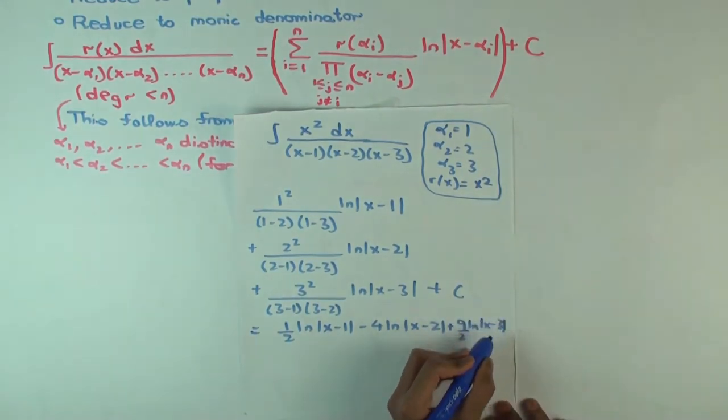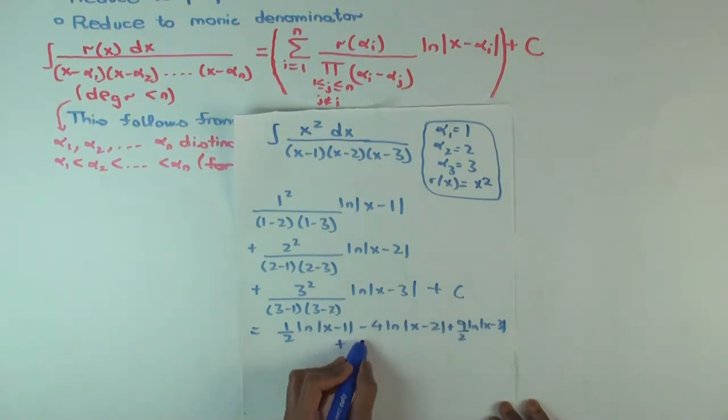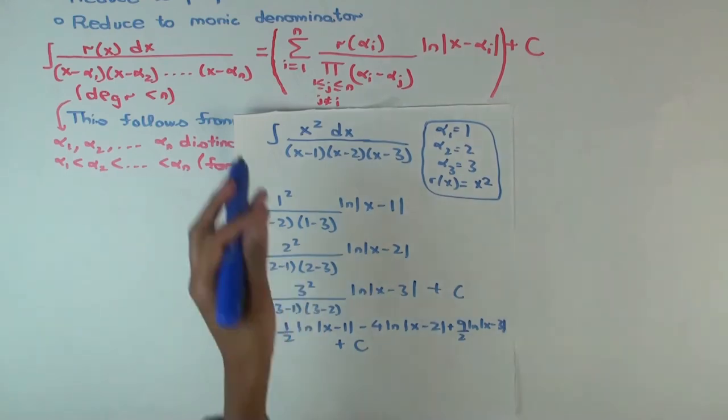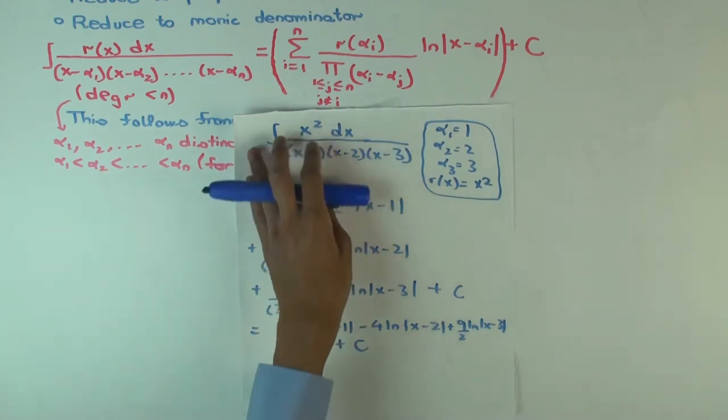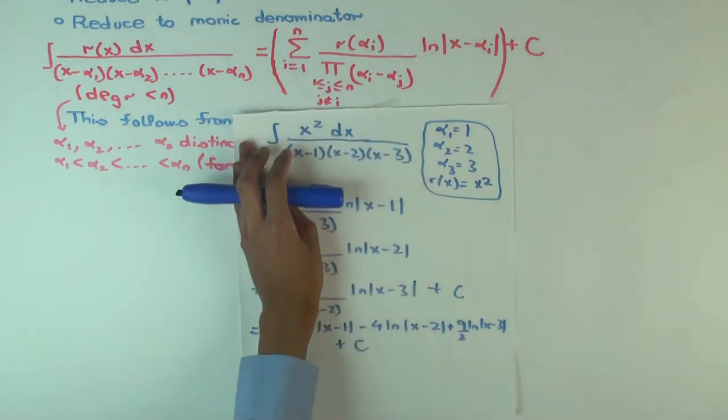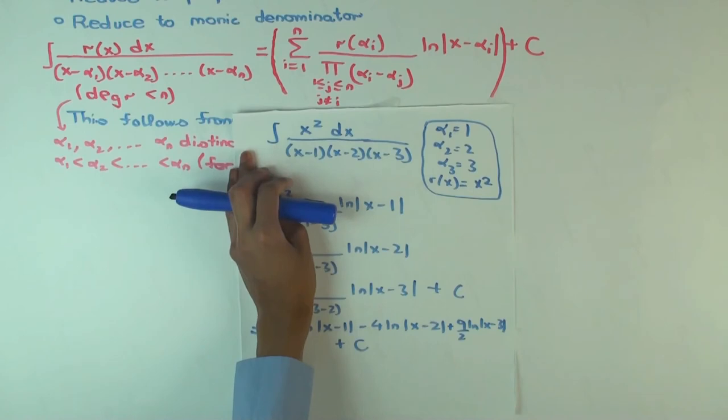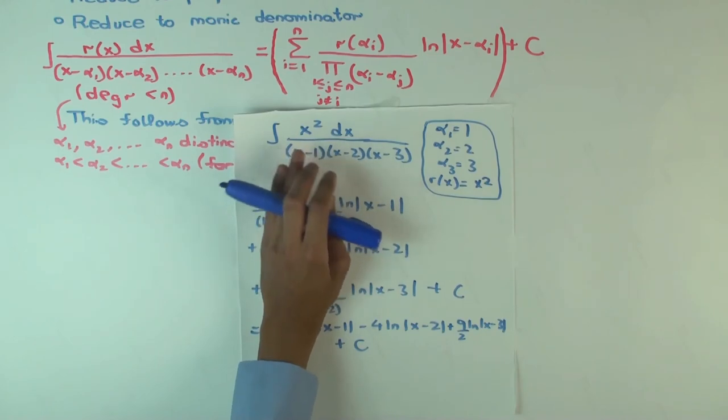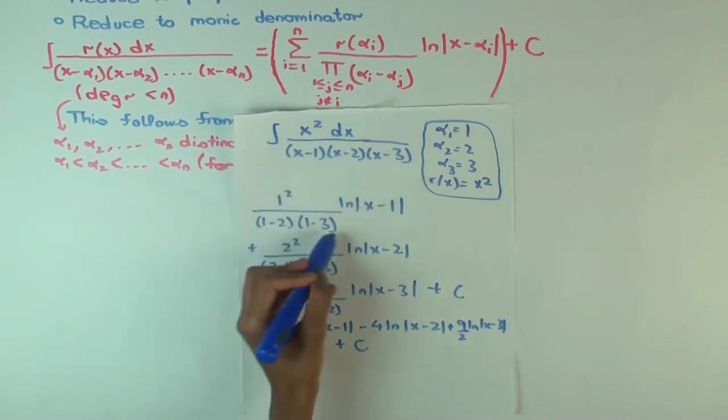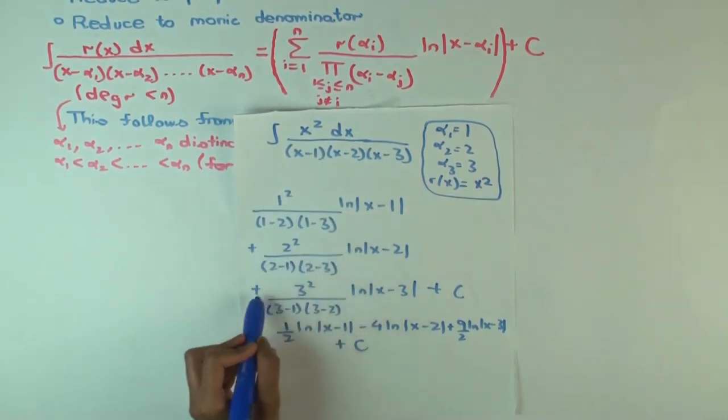and x minus 3 absolute value plus C. That's good, we just use the formula blindly. Now if you actually had to do it using partial fractions, you would set this thing equal to C1 over x minus 1 plus C2 over x minus 2 plus C3 over x minus 3. And then after you solve that, you would actually get C1 as this number, C2 as this number, and C3 as this number.